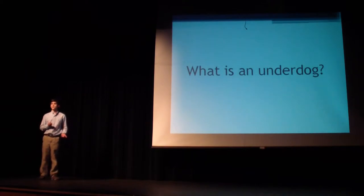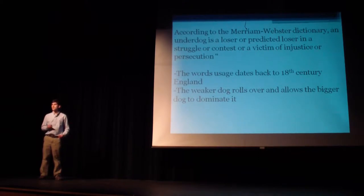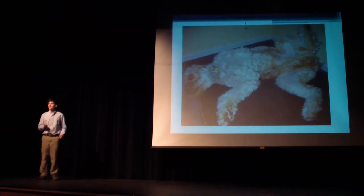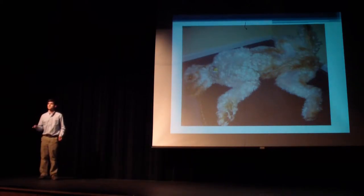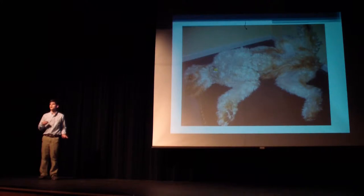First of all, you've got to know: what is an underdog? An underdog is the loser or projected loser in a competition or struggle. The word comes from English — the basic idea is that the weaker, smaller dog rolls over and the bigger dog is on top of it. The weaker dog becomes the underdog because the bigger dog is on top.